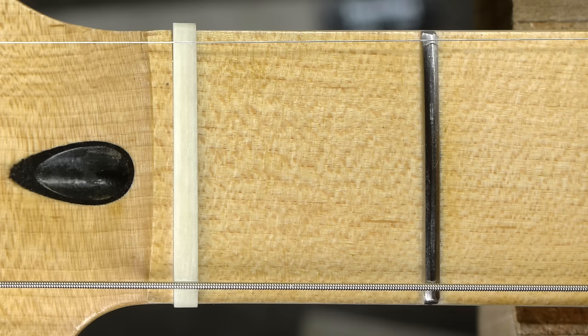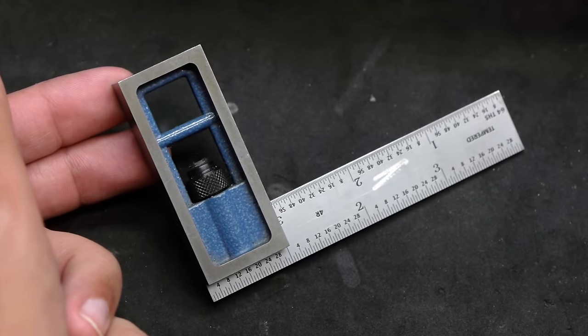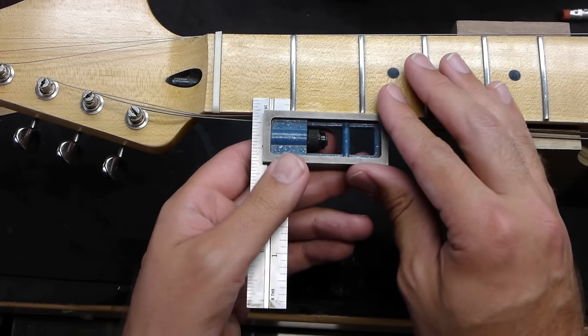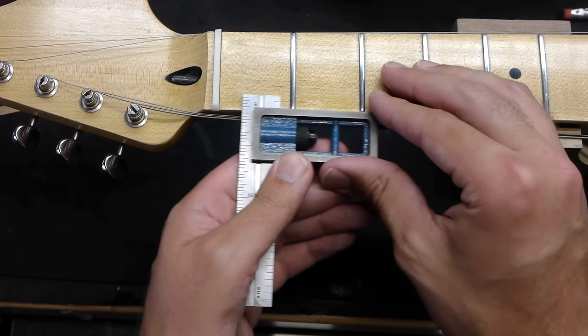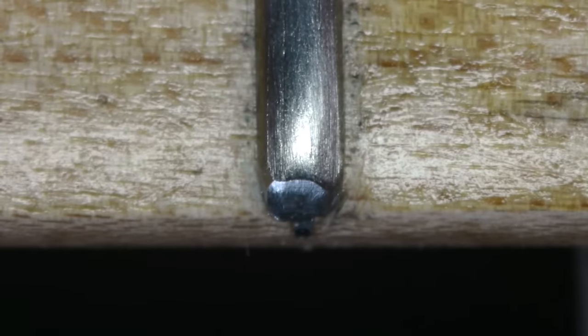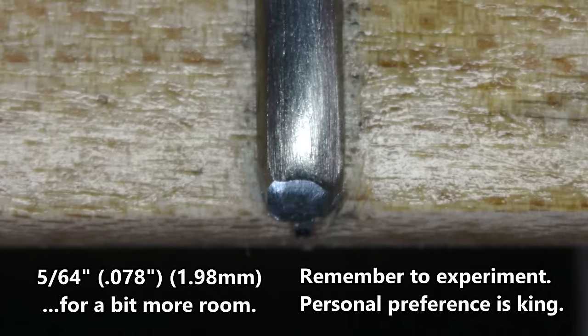The first step to spacing is cutting the slots for the outermost strings. The secret here is a 4 inch double square. The steel body of the double square butts up flat against the side of the neck with the ruler of the double square behind the first fret. Notice where the bevel of the fret is. A good rule of thumb is to space the outermost strings 4 64ths of an inch from the fret bevel on either side.